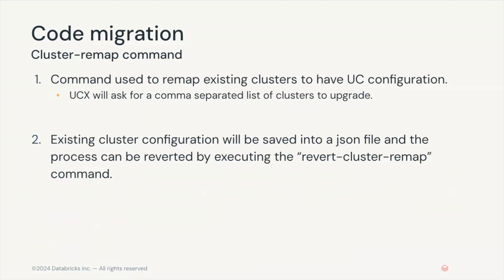Finally, another useful command that exists as part of UCX is the cluster remap command. This command allows you to remap the existing cluster configurations to Unity Catalog configurations. You need to provide the comma-separated list of clusters that you need to upgrade. It will migrate them to Unity Catalog compatible clusters and it will back up the old configuration of those clusters to a JSON file.